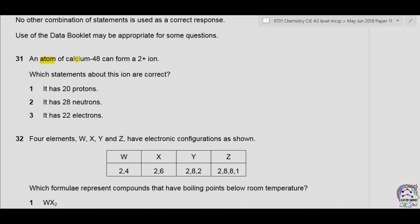Question number 31. An atom of calcium 48 can form a 2 positive ion. Which statements about this ion are correct? The atomic mass of calcium is given. It is 48. So we can write 48. From periodic table, we know that the atomic number of calcium is 20. So the number of protons is equal to 20. While the number of neutrons is equal to mass number minus atomic number. As the charge is given as 2 positive, therefore, 2 electrons are lost. So the number of electrons is 20 minus 2 equals 18.